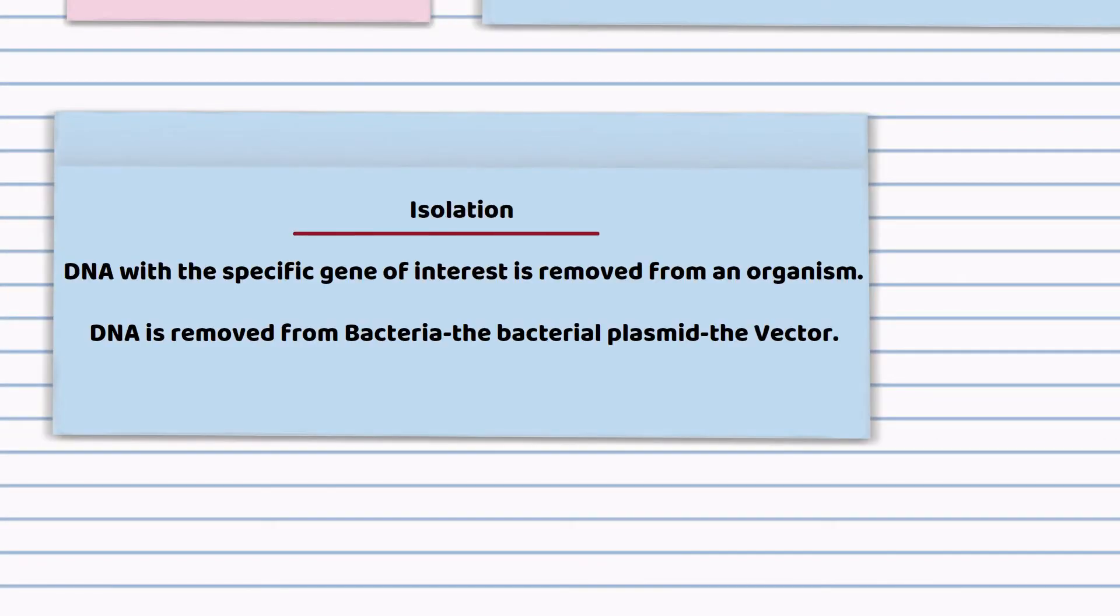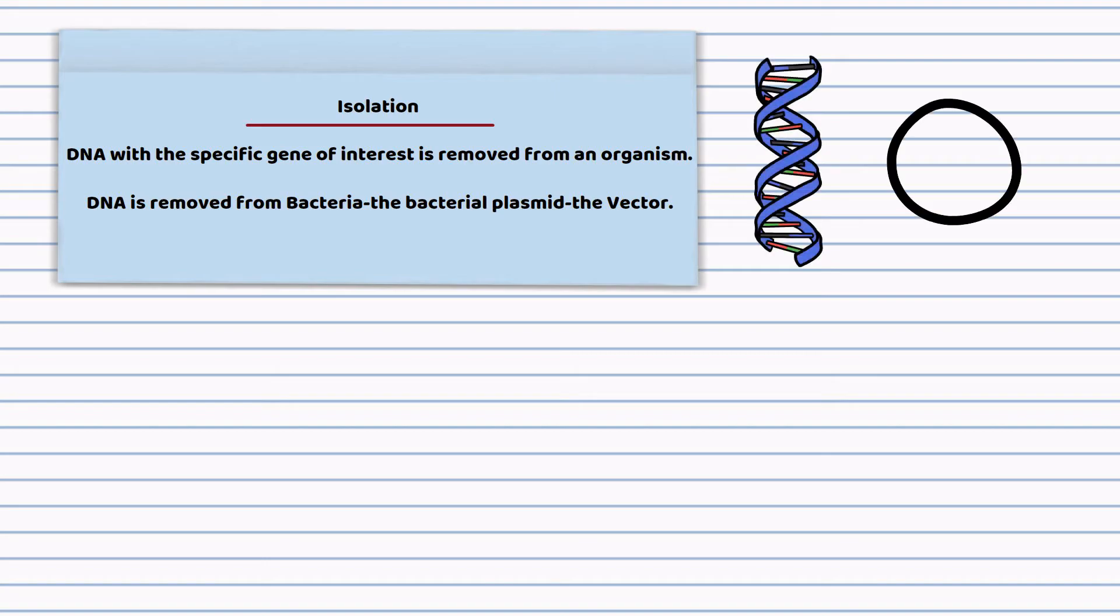Isolation. The DNA with the specific gene of interest is removed from an organism and DNA is also removed from the bacterium because the bacterial plasmid is going to act as the vector. It's going to transfer the DNA from one organism into another.